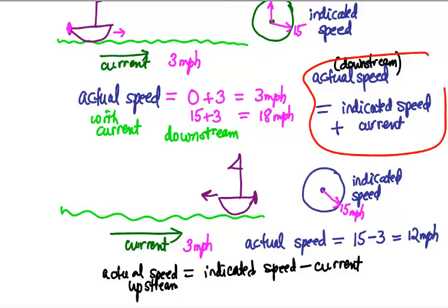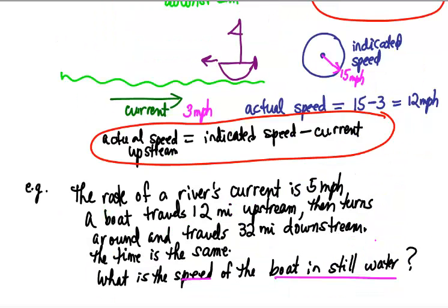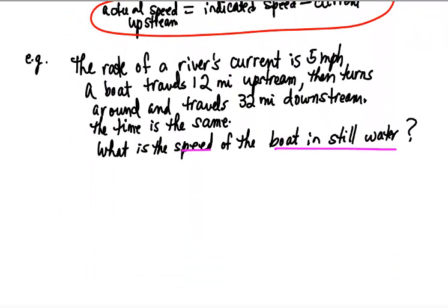These two formulas are so important that they're worth memorizing. Now we'll do an example: the rate of the river's current is five miles per hour; a boat travels twelve miles upstream and then turns around and travels thirty-two miles downstream; the time for both routes is the same. We're asked: what is the speed of the boat in still water? Still water means there's no current, so that's the same as the indicated speed — whatever's on your speed gauge.